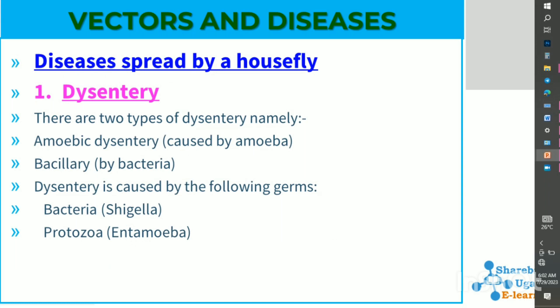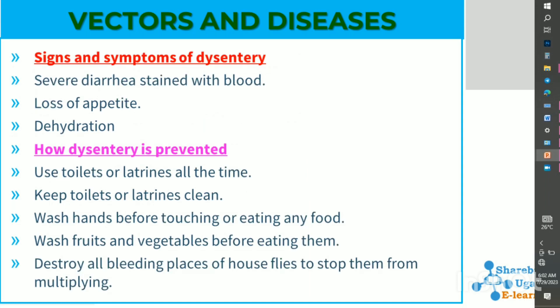There are two types of dysentery: amoebic dysentery, caused by the protozoa Entamoeba, and bacillary dysentery, caused by a bacteria. Dysentery is caused by the bacteria Shigella, which causes Shigella dysentery, and by the protozoa Entamoeba, which causes amoebic dysentery.